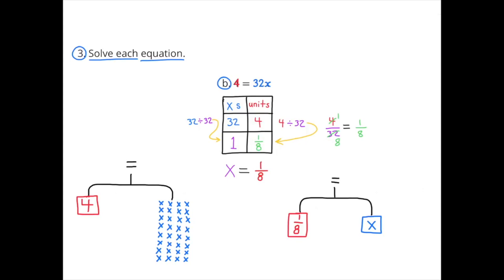I also showed it as a hanger. 4 units on the left side is in balance with 32 X's on the right hand side. The hanger that has 1 X on the right hand side is in balance with 1 eighth unit. X equals 1 eighth.